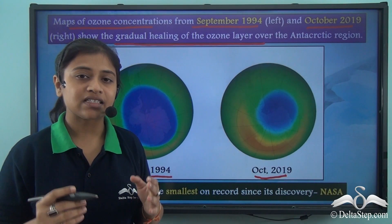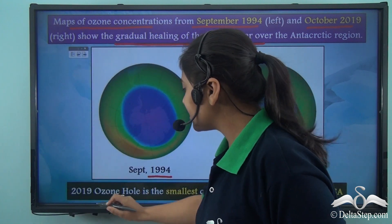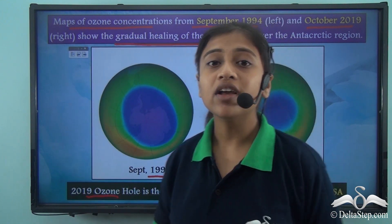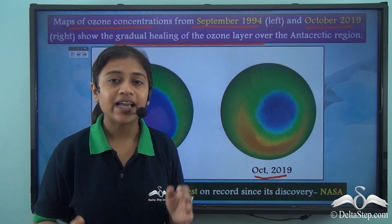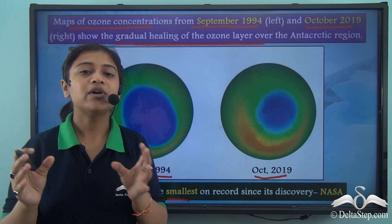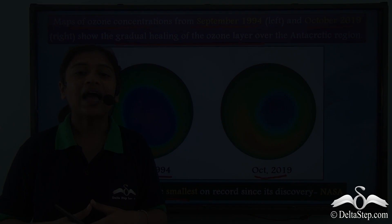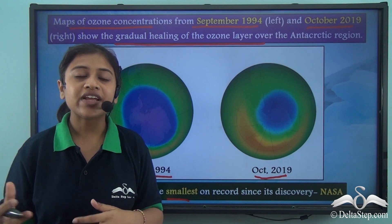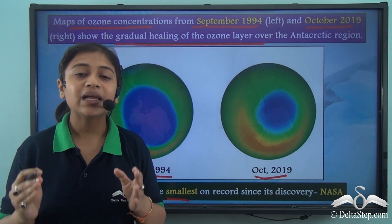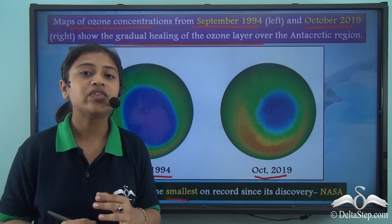As per NASA studies, the 2019 ozone hole is the smallest on record since it was first discovered. With proper measures and guidance, the ozone hole can actually be healed and there can be a reduction in the depletion of the ozone layer, which is very important for protecting the earth from harmful UV rays.